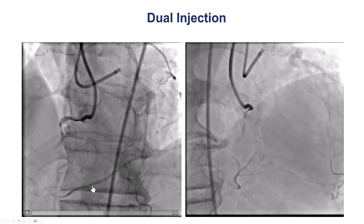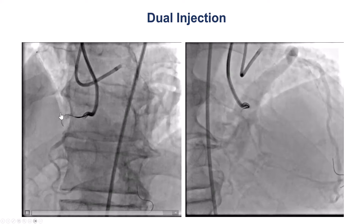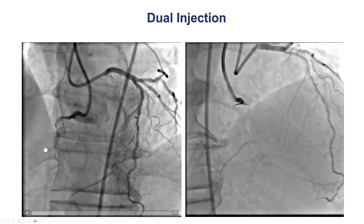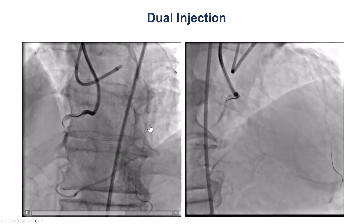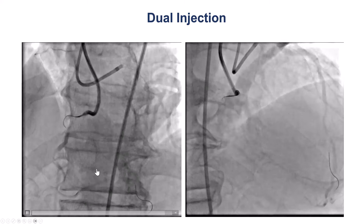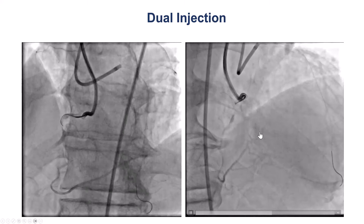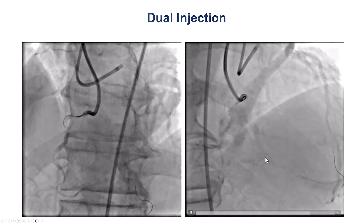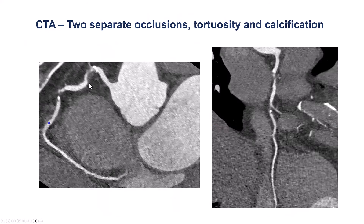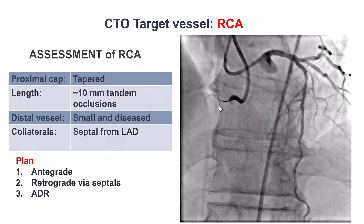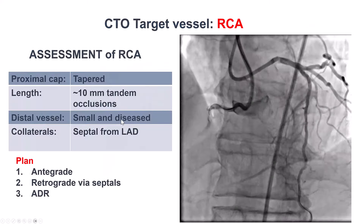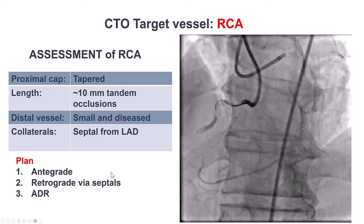This is a diagnostic angiogram. There is an occlusion of the proximal and middle RCA. No significant disease on the left. There are several collaterals filling a small PDA system as well as the right posterolateral. He did have a coronary CTA that demonstrated essentially two areas of occlusion, one in the proximal and one in the mid-right coronary artery. There was some calcium in the mid-right coronary artery. The occlusions were short, and the distal vessel was small and diffusely diseased.